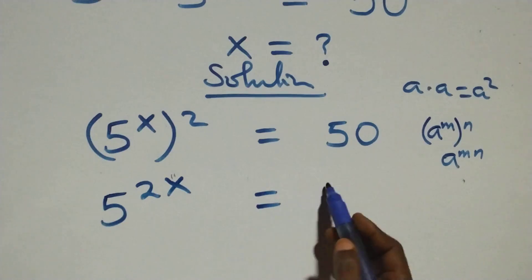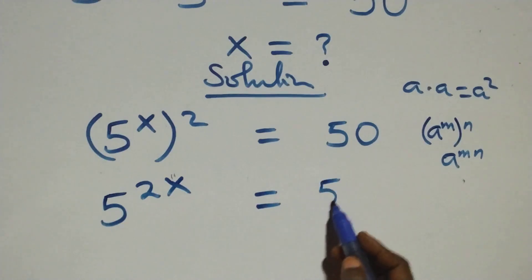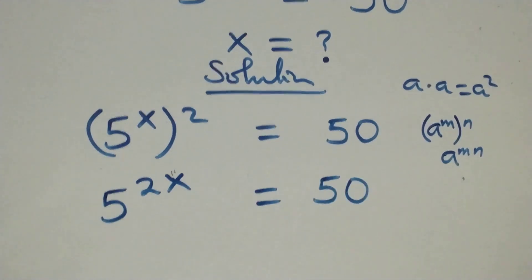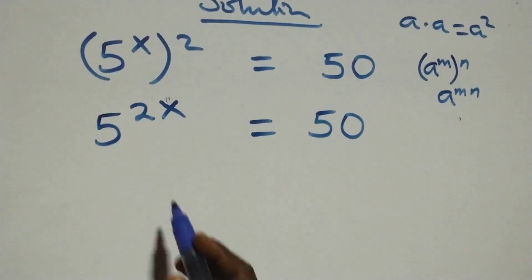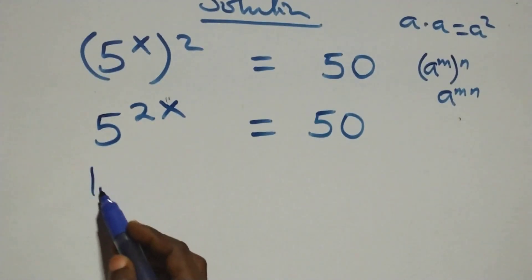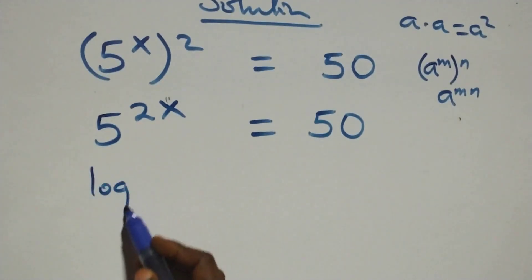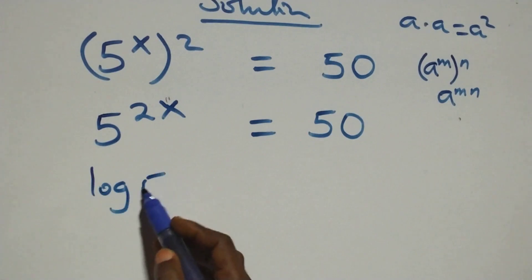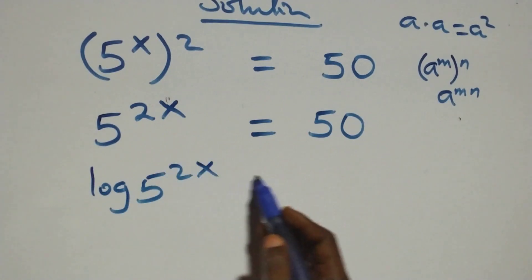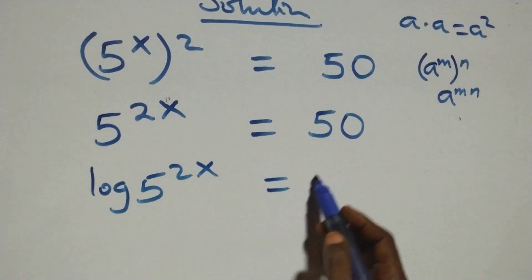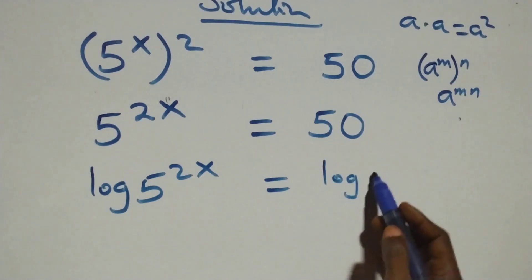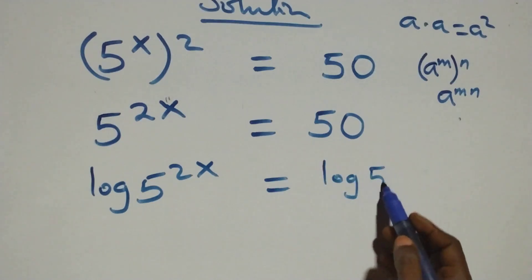Equals 50 on this side. Next step: take the log on both sides. We have log of 5 raised to power 2x equals log 50 on this side.